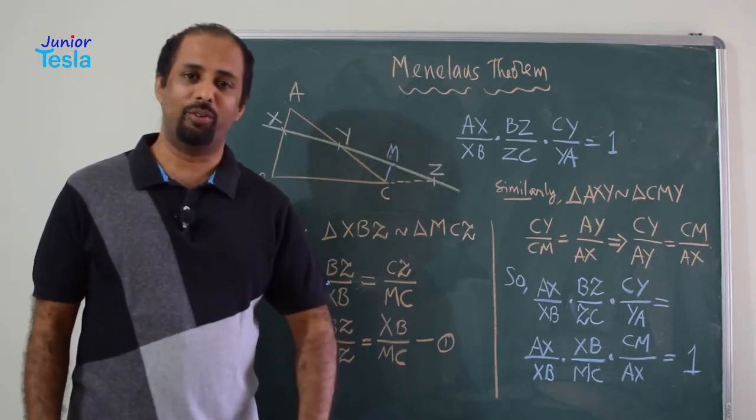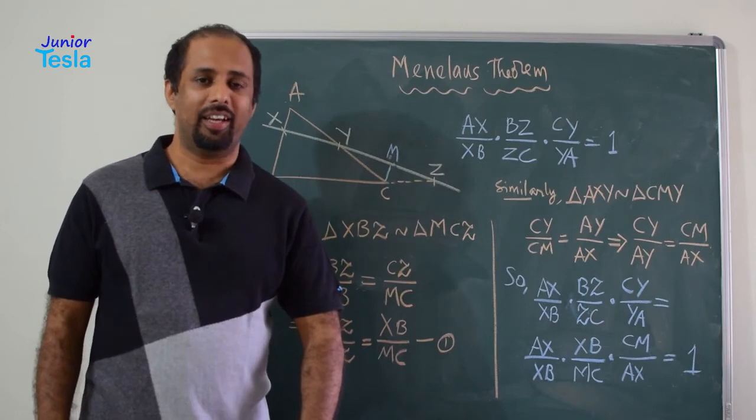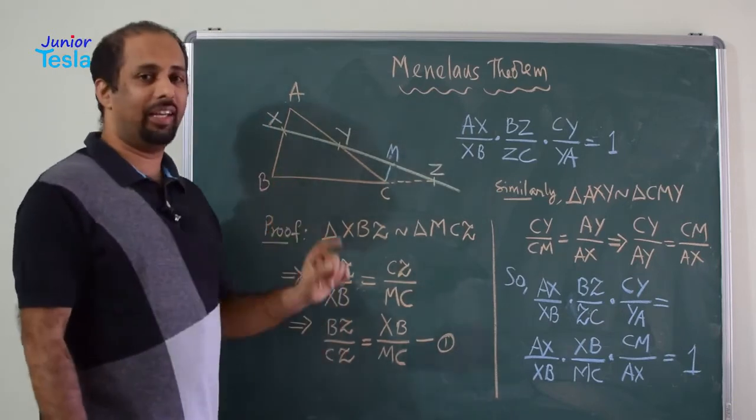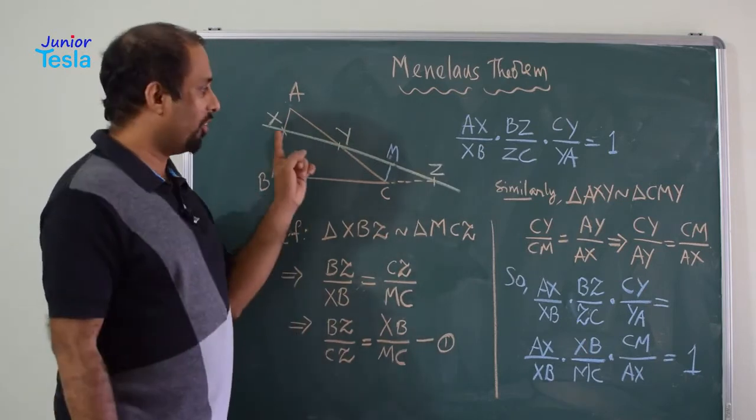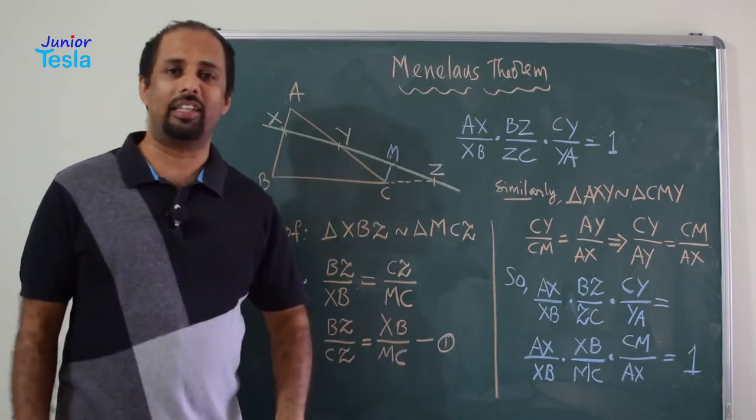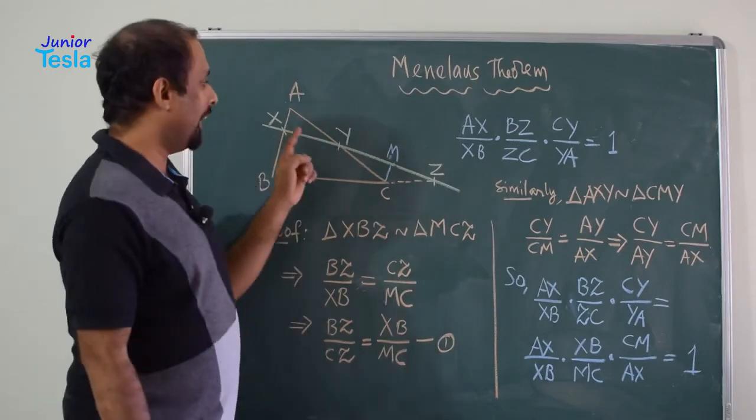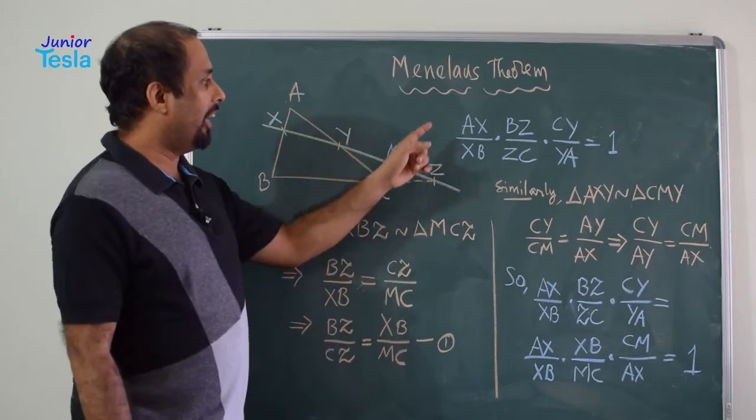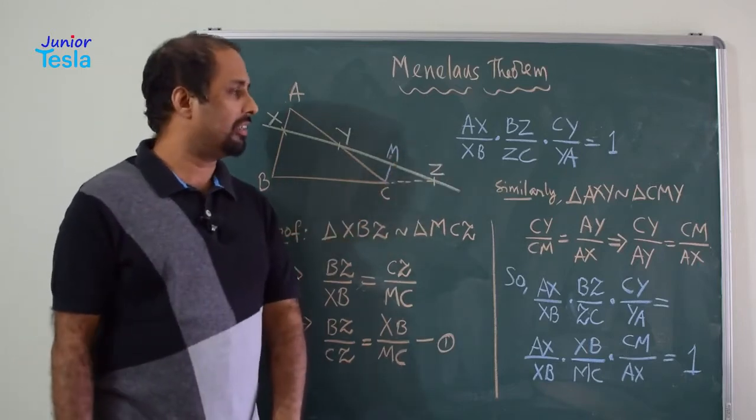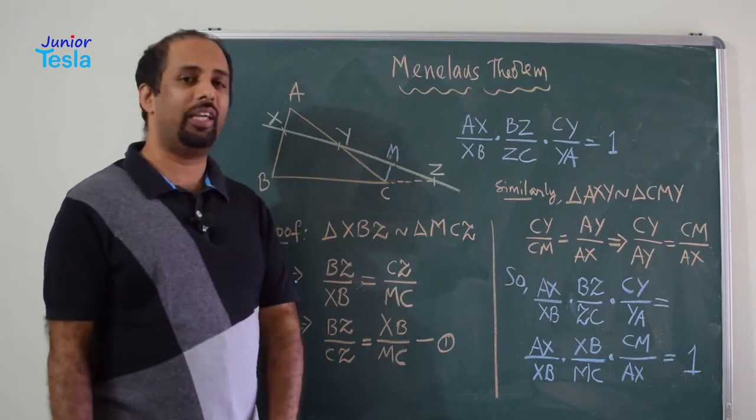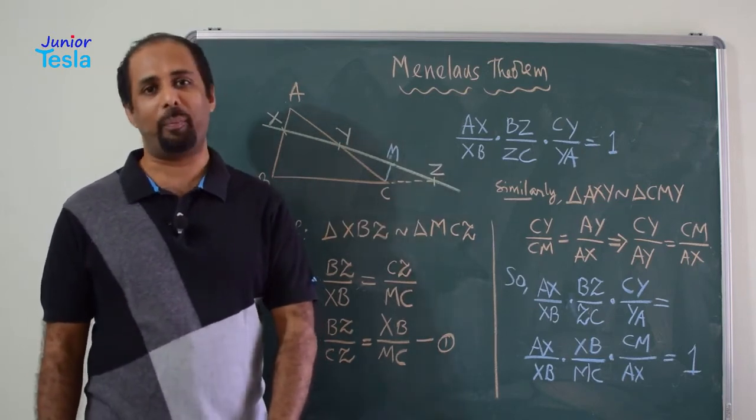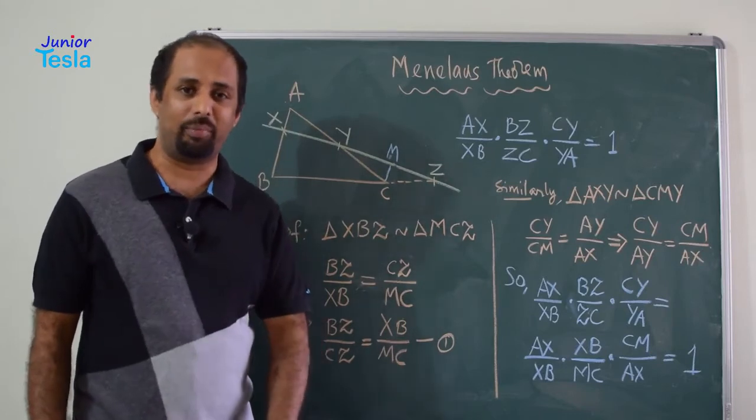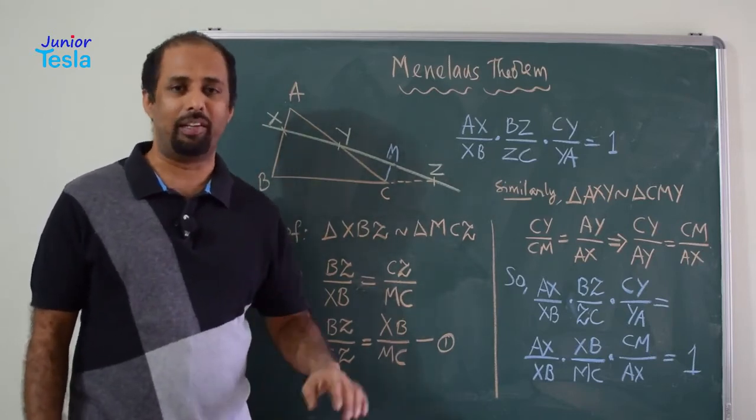Menelaus is a Greek mathematician who lived around 100 AD and his theorem says that if you have taken a triangle ABC and a line is drawn such that it will cut the three sides of the triangle in X, Y and Z respectively, then AX by XB into BZ by ZC into CY by YA is equal to 1. The theorem or the result looks quite complicated, but it is not a complicated result. It is a very simple result.